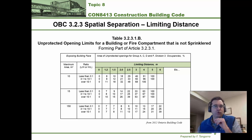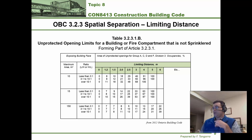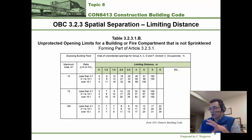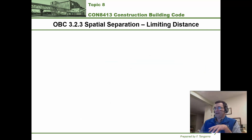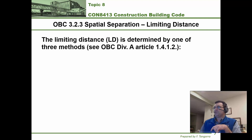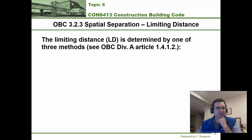I want to take you on a tour of this table, because all four tables are set up the same way. Along the top you'll find limiting distances in meters, going from zero all the way up to very large numbers. This distance is always in meters. Next, we're going to find what limiting distances mean — if I were looking for the definition of limiting distances, where would I find it in the building code?